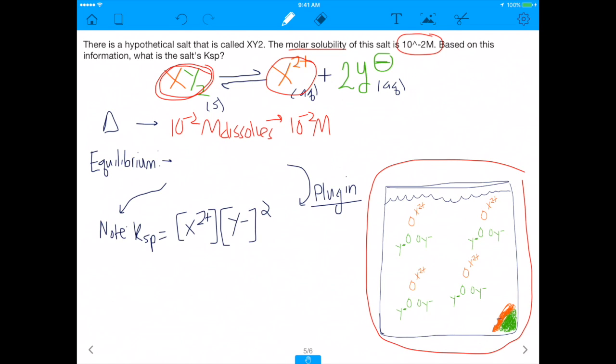And again, this makes sense because for every 1 molecule of XY2 that dissolves, you get 1 molecule of X2 plus. However, what you'll realize is you get twice as many Y minuses. You end up getting twice as many Y minuses. So when you wanted to find the change in Y minus as something's dissolving, it's going to be 2 times 10 to the negative 2, right? So at the end of the day, when you have the equilibrium, what you're going to see is at equilibrium, you're going to have 10 to the negative 2 molar X2 plus. But then you're going to have 2 times 10 to the negative 2 molar of Y minus, just because when you dissociate, you make 1 X2 plus and 2 Y minus.